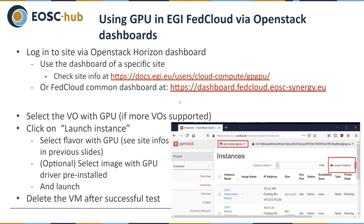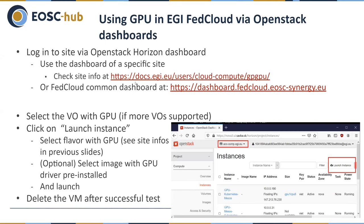This is how to use GPU in the EGI Federated Cloud via the OpenStack dashboard. Every site has an OpenStack dashboard — you can check this link to get the dashboard link for every site. You can log into the dashboard and use a command dashboard for different sites. Once logged in, you can run instances, select your flavor with GPU, select your image with GPU, and run it.